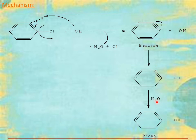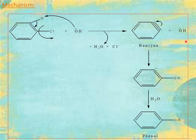Then, water released in step one donates a proton, which attaches to the carbanion. Finally, we get phenol. The intermediate generated in this reaction is benzyne, which accepts OH⁻ and converts into an anion. The anion abstracts a proton from water to liberate phenol. That is the Dow process.